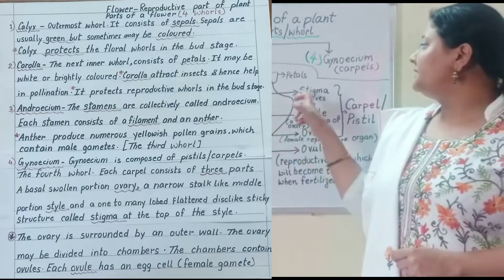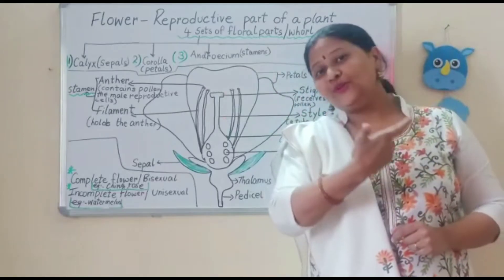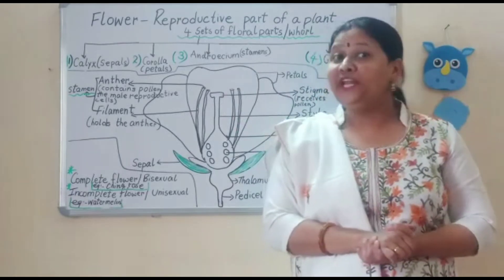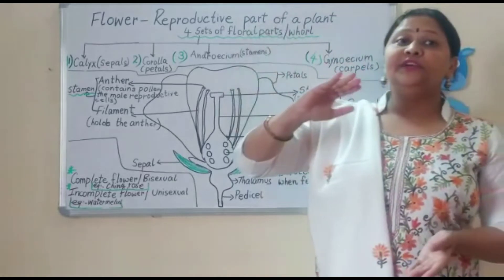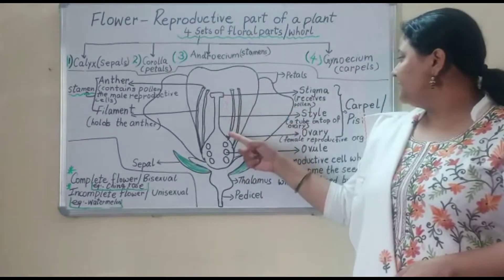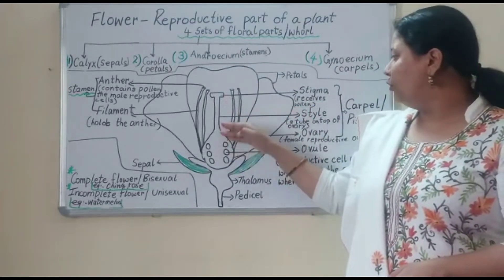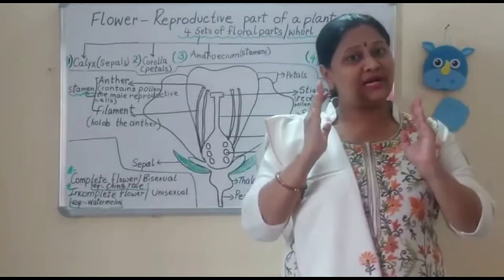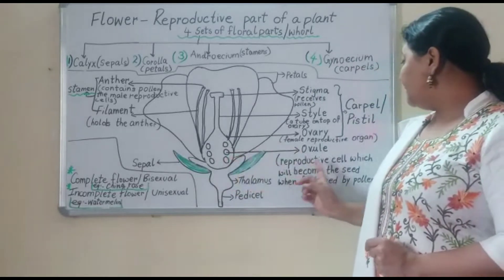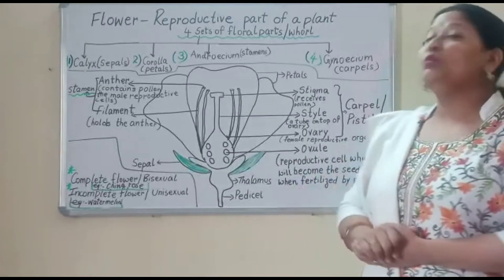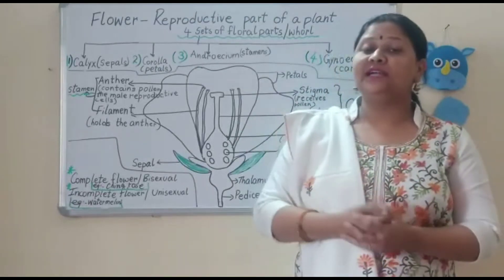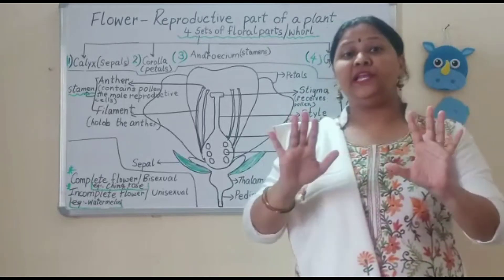The role of the stigma is that it receives the pollen. In the next session on reproduction in plants, we will see how pollen grains travel from the anther to the stigma. The style is a tube on top of the ovary. The ovary is the female reproductive part, and inside the ovary is the ovule. The ovule is the reproductive cell which will become the seed when fertilized. We will discuss this in detail in the next session on reproduction in plants.